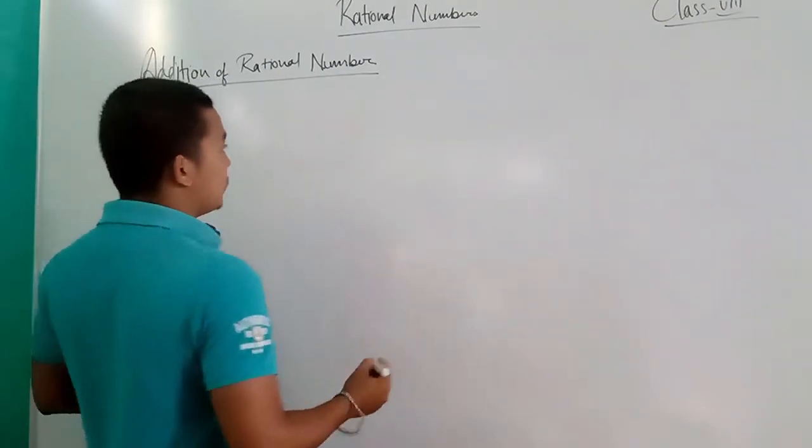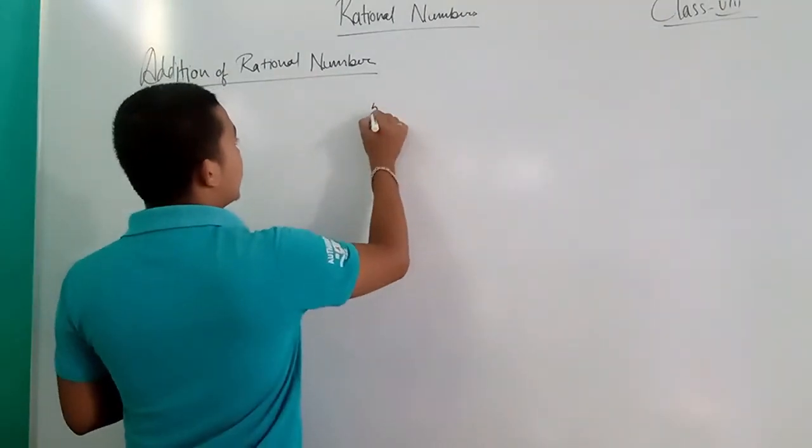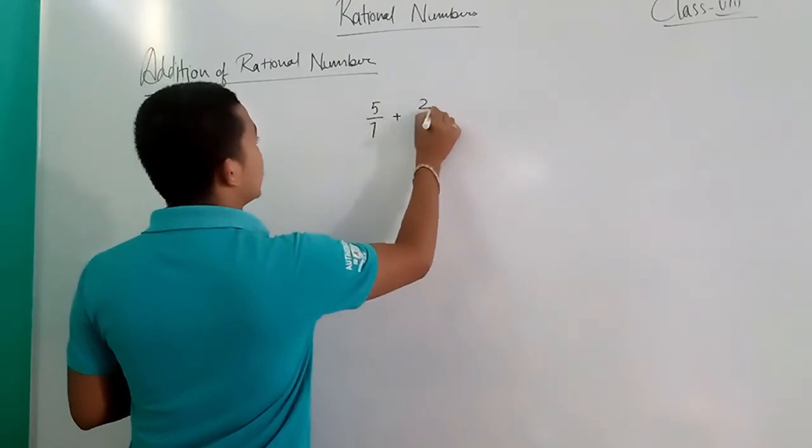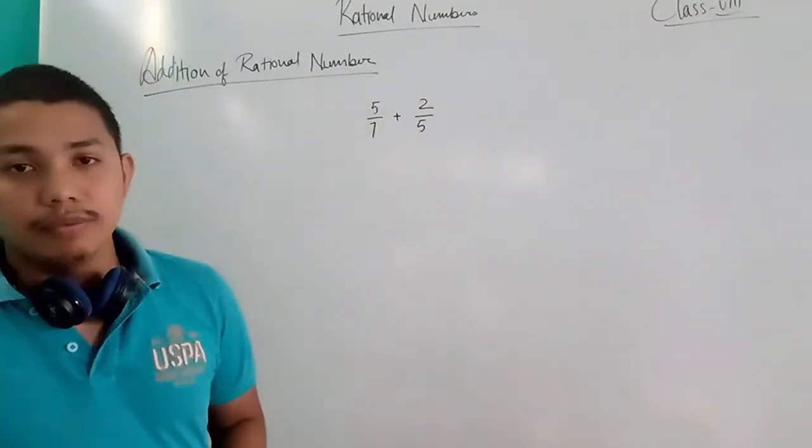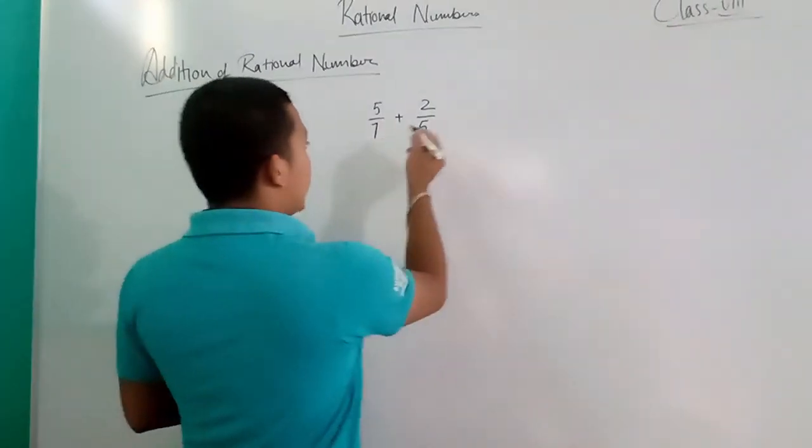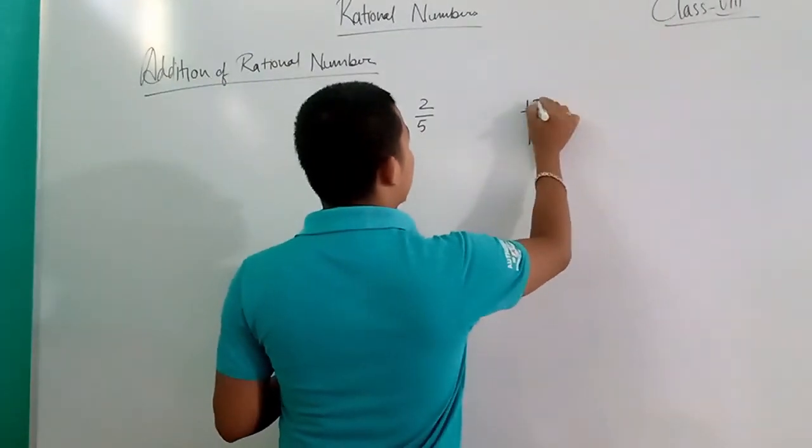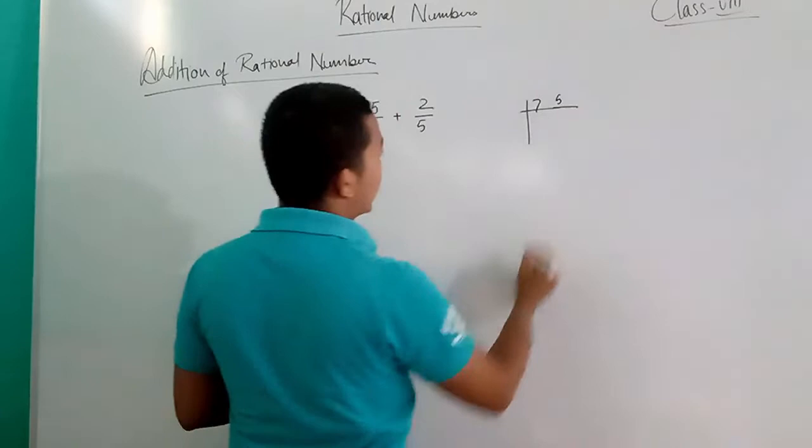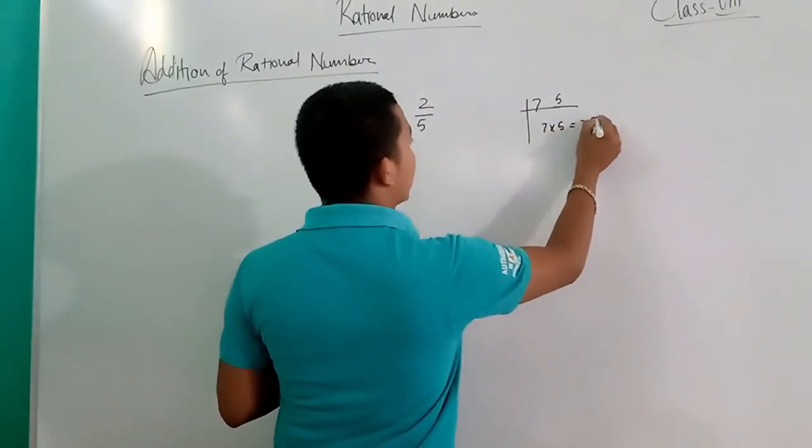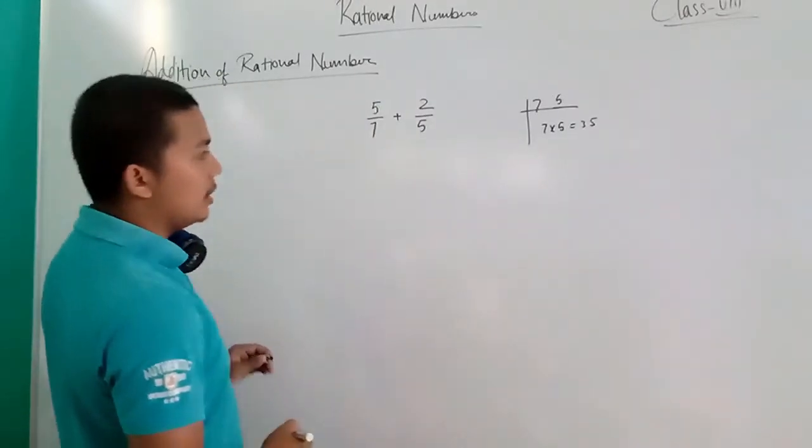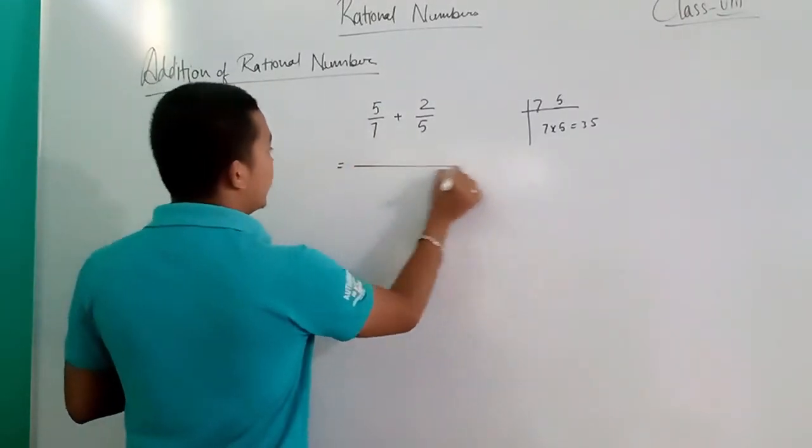Next example: 5/7 plus 2/5. So 7 and 5, no common factor. 7 into 5, that means LCM is 35.